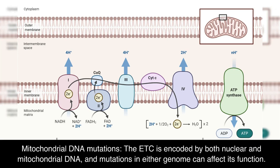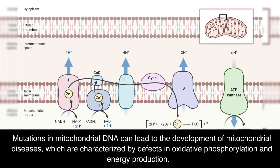Mitochondrial DNA mutations: the ETC is encoded by both nuclear and mitochondrial DNA, and mutations in either genome can affect its function. Mutations in mitochondrial DNA can lead to the development of mitochondrial diseases, which are characterized by defects in oxidative phosphorylation and energy production.